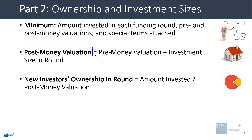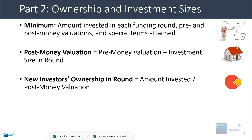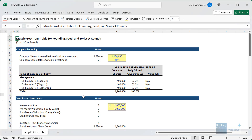The post-money valuation equals the pre-money valuation plus the investment size in the round. The new investor's ownership in the round equals the amount they invest divided by the post-money valuation. These pre- and post-money valuation numbers are really just equity value — as with equity value for a public company when it raises equity, its equity value goes up but its enterprise value stays the same.